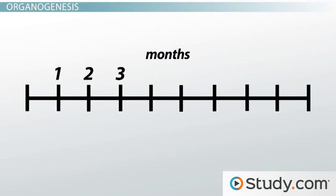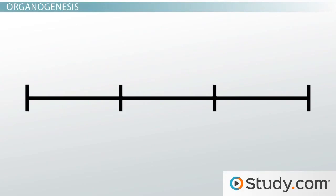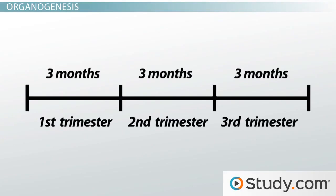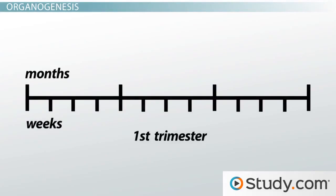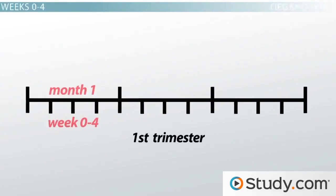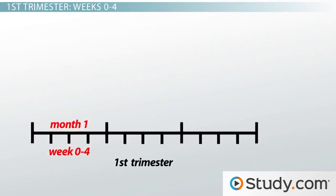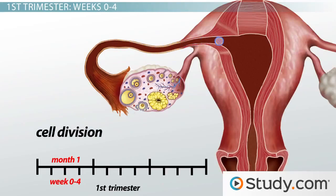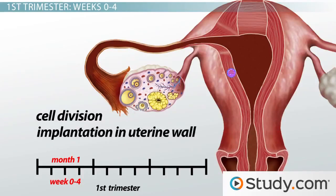We all know that gestation takes about nine months. These nine months are divided into three parts, or trimesters. Each part consists of three months, hence the word trimester. So let's start right there in the first trimester, month one. The first month after fertilization is pretty much just lots and lots of cellular divisions. By the end of the first week, the embryo has made it to the uterus and is in the process of implanting itself into the uterine wall.